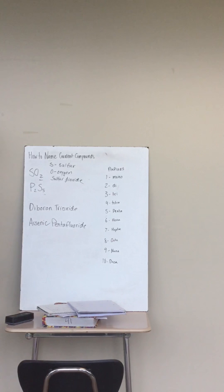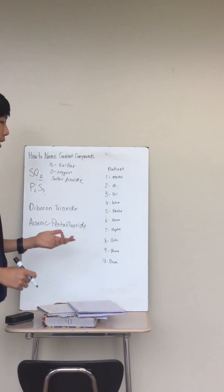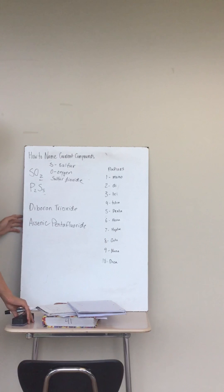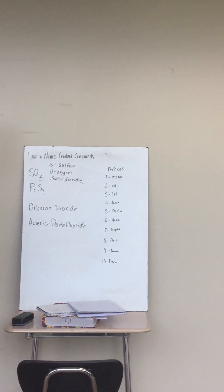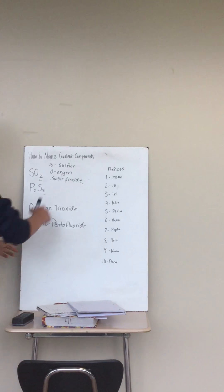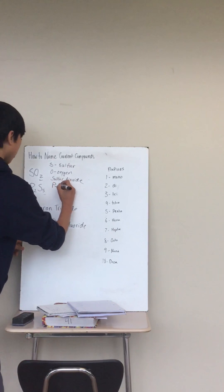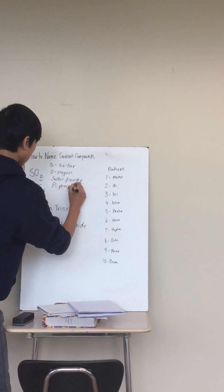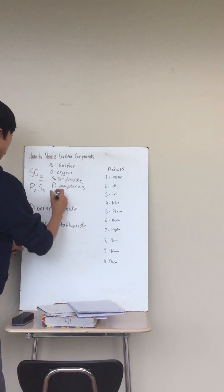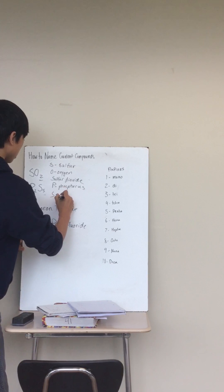The prefix is very important because if you don't have it, it would be incorrect and it would change the meaning of the compound. In our next example we have P₂S₅. Again, the first step is to identify the two elements. P is phosphorus, and S like in our previous case is sulfur.